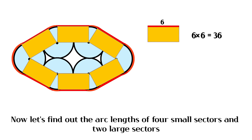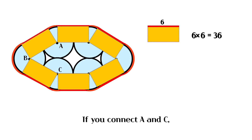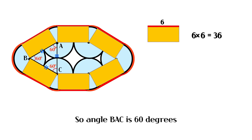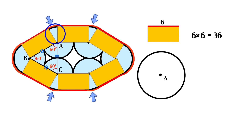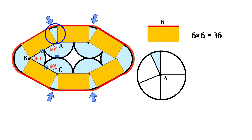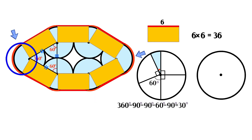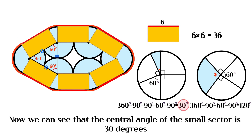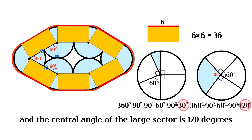Now let's find out the arc lengths of four small sectors and two large sectors. If you connect A and C, triangle ABC is an equilateral triangle, so angle BAC is 60 degrees. Now we can see that the central angle of the small sector is 30 degrees, and the central angle of the large sector is 120 degrees.